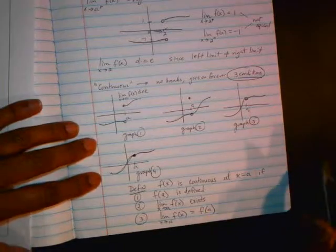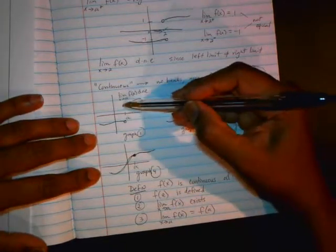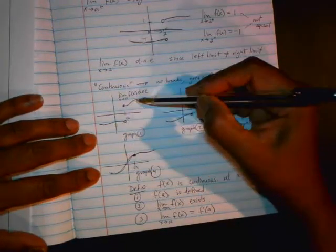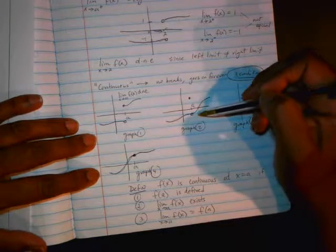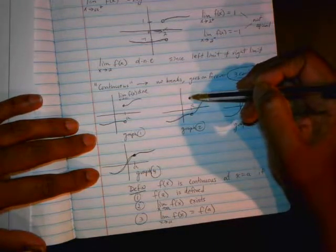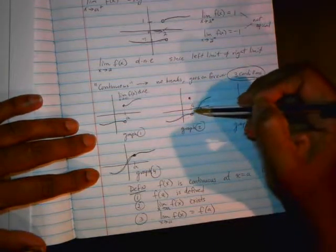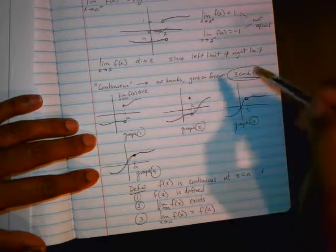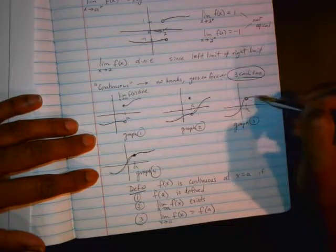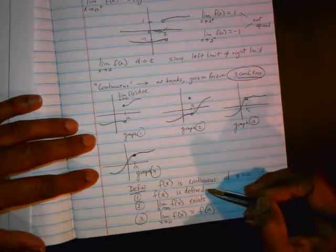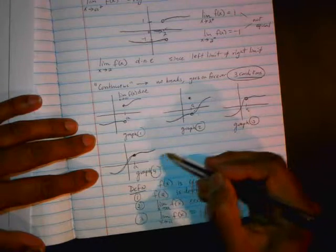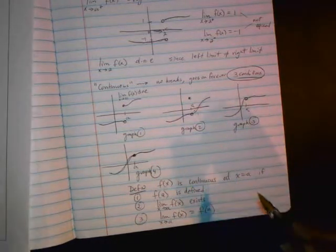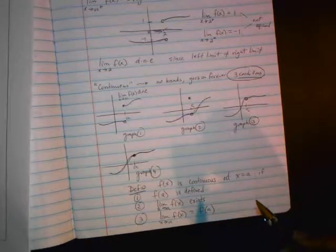Going back to the three graphs. In the first one, the function was defined, but the limit did not exist. Here, the function was defined, the limit existed, but the two were not equal. The third condition did not happen. For the third graph, the limit existed, but the function was not defined. In the last one, all three conditions were satisfied, and hence the function was continuous.